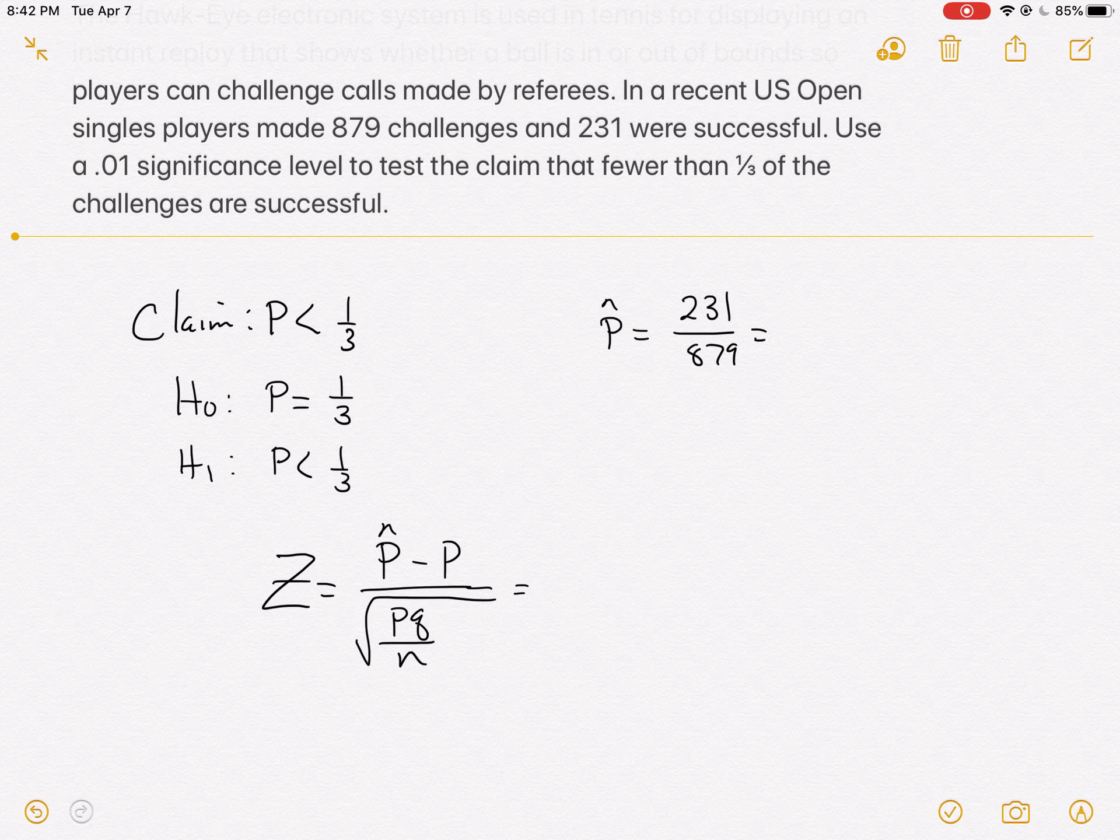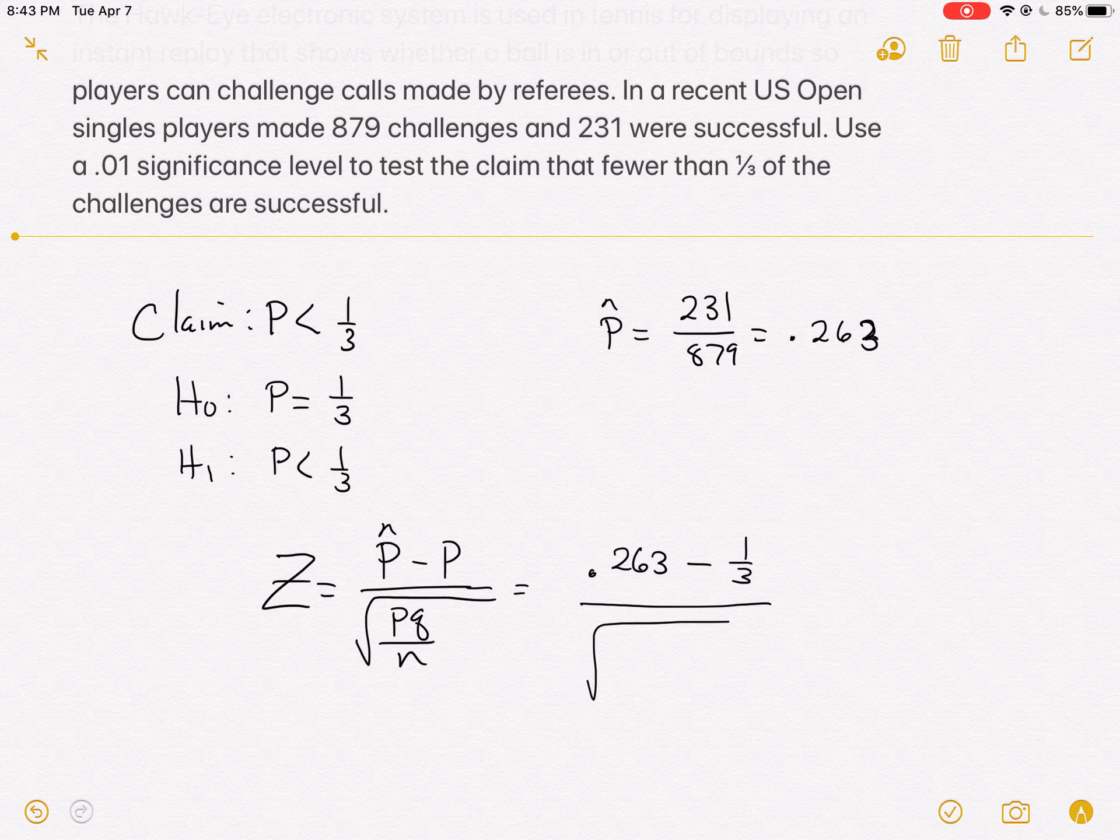Let's see what 231 divided by 879 is. I would at least go out to three significant digits, and we get 0.263. So we have 0.263, which is 26%, minus p. P is 1 third, and that's about 33%, so we can see why we're claiming that it's less than 1 third. Then the square root of 1 third times 2 thirds, all divided by 879.